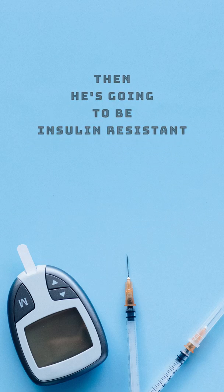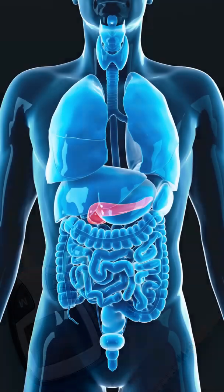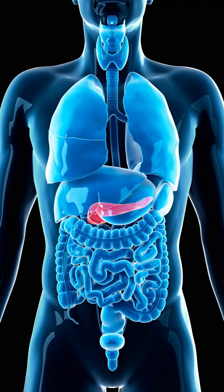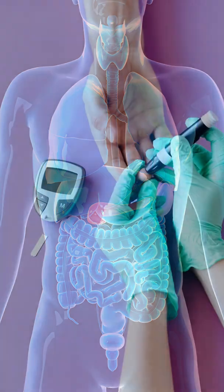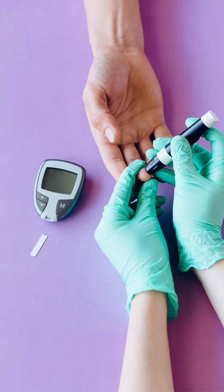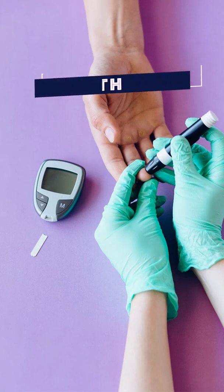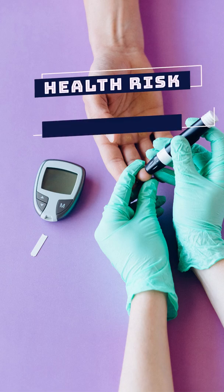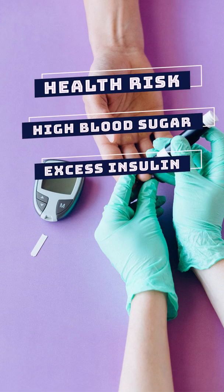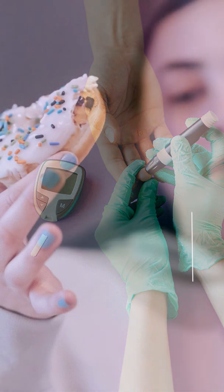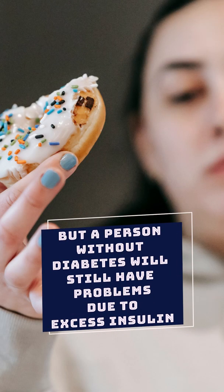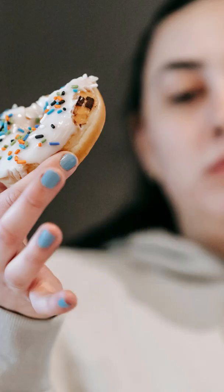Becoming diabetic is dependent on how well his pancreas works in meeting the demands for insulin. A person with diabetes will have health risks due to high blood sugar and also excess insulin. A person without diabetes will have health risks due to excess insulin.